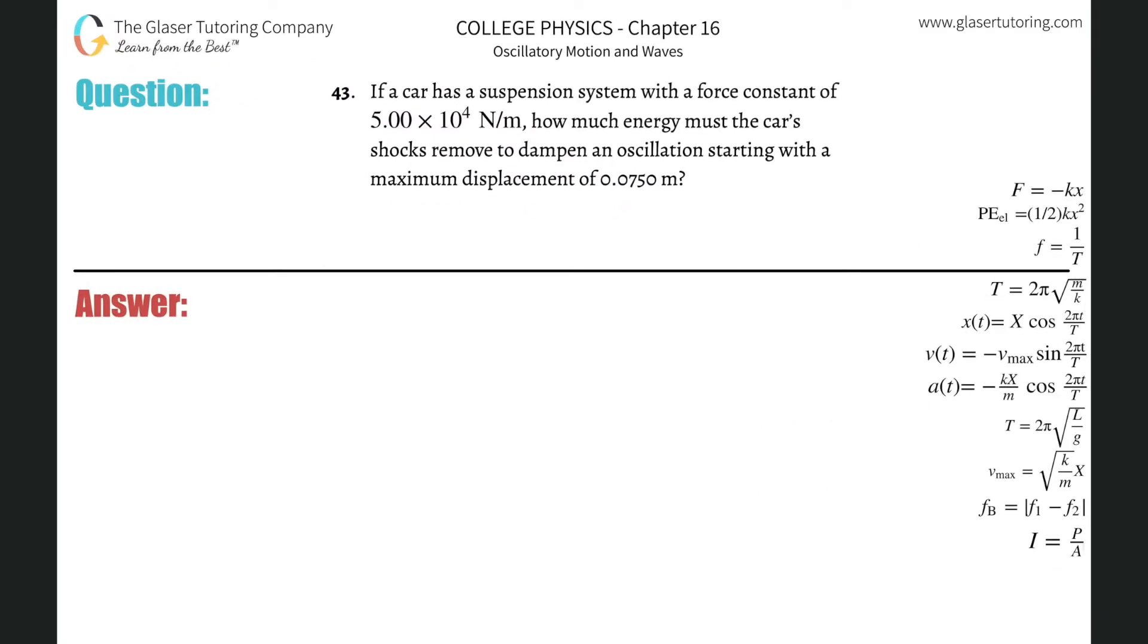If a car has a suspension system with a force constant of 5 times 10 to the 4 newtons per meter, how much energy must the car's shocks remove to dampen an oscillation starting with a maximum displacement of 0.075 meters?